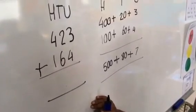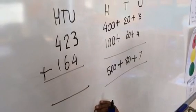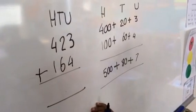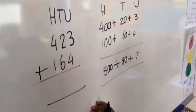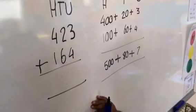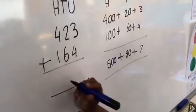Finally we need to recombine these numbers together which is 500 plus 80 plus 7. So the answer will be 587.